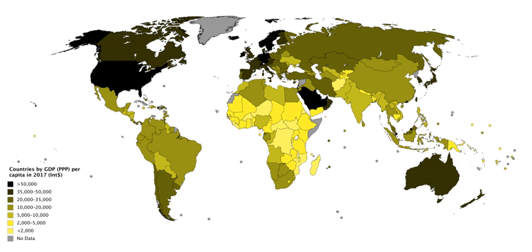Gross national income equals GDP plus income receipts from the rest of the world minus income payments to the rest of the world. In 1991, the United States switched from using GNP to using GDP as its primary measure of production. The relationship between United States GDP and GNP is shown in Table 1.7.5 of the National Income and Product Accounts.